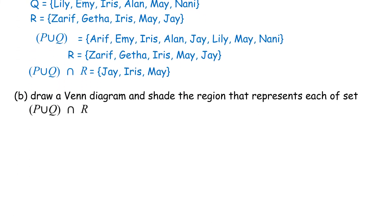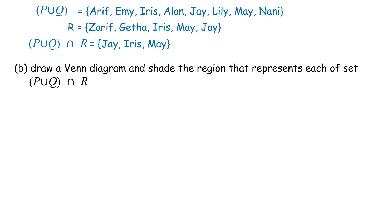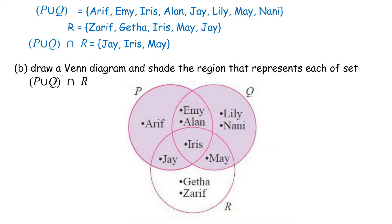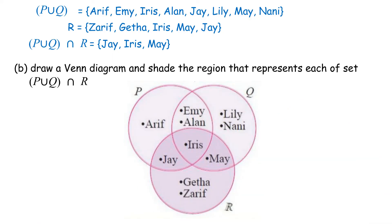Part B: Draw a Venn diagram and shade the region that represents set (P union Q) intersect R. Shade the region for set P union Q. Shade the region for set R. Set (P union Q) intersect R refers to the common region for both sets P union Q and R.